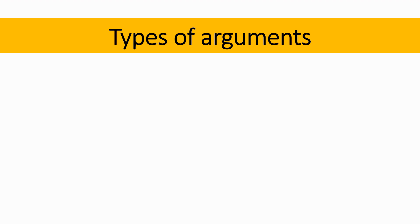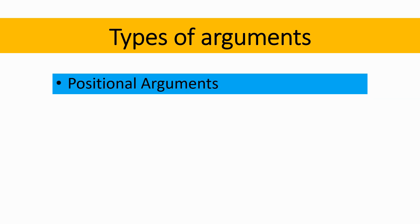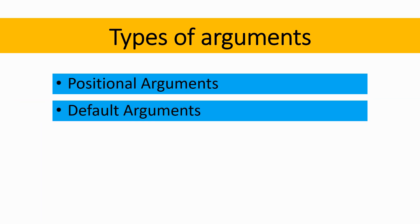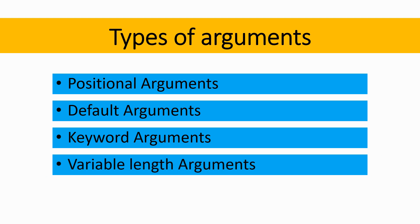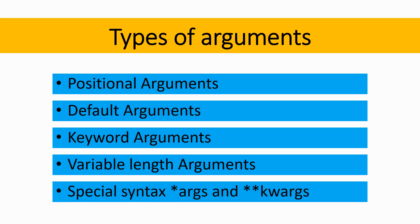Hello everyone, welcome back to my channel. This is Ajay and today we are going to understand the various types of arguments in Python. The first thing we'll understand is positional arguments, then default arguments and why we require them, third is keyword arguments, and fourth is variable length arguments using the special star and double star syntax.